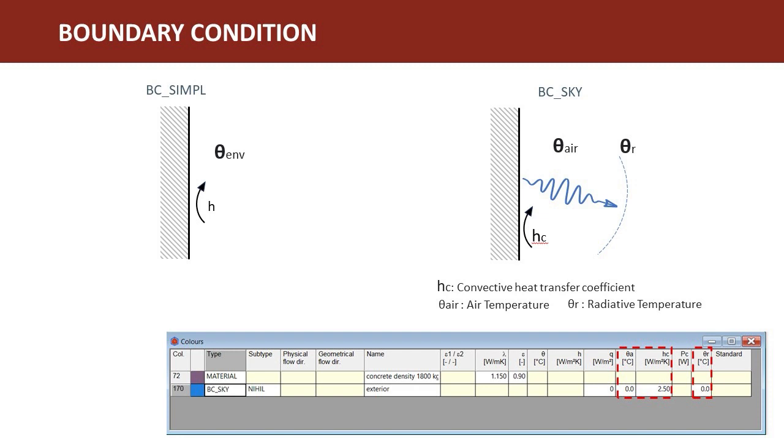The type BC_SKY allows to differentiate between convection and infrared radiation. Convection is defined via a convective heat transfer coefficient h_c. For radiation towards the environment, one should define the radiation temperature of the environment, theta_R.